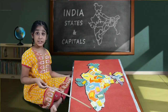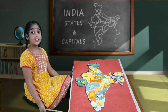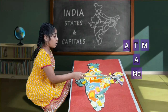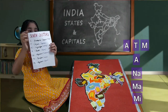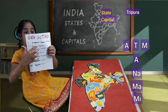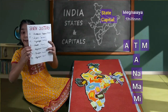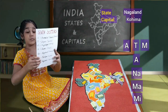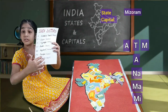Now we'll move to the Northeastern states. Those are the Seven Sisters. We can remember them easily with the sentence: A-T-M-A-N-A-M-I. A — Arunachal Pradesh, capital Itanagar. T — Tripura, capital Agartala. M — Meghalaya, capital Shillong. A — Assam, capital Dispur. Na — Nagaland, capital Kohima. Ma — Manipur, capital Imphal. Mi — Mizoram, capital Aizawl.